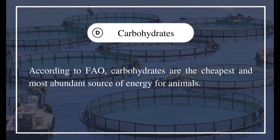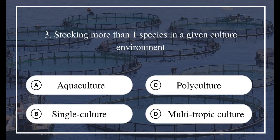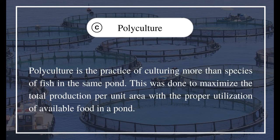Question 3: Stocking more than one species in a given culture environment is called — A) Aquaculture, B) Single culture, C) Polyculture, D) Multitrophic culture. The answer is C) Polyculture. Polyculture is the practice of culturing more than one species of fish in the same pond. This is done to maximize total production per unit area with proper utilization of available food in a pond.